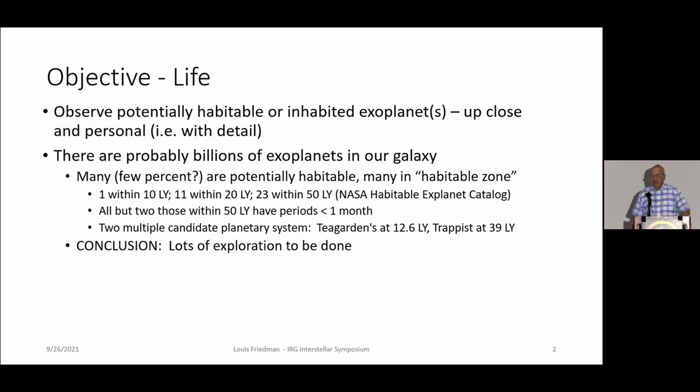But there are exoplanets. We now know there are billions of exoplanets. We know there are a large percentage of them in a habitable zone. Many are Earth-like in their size, some are Earth-like in their temperatures. And we know from studies of life here on Earth that life exists in lots of extreme environments.